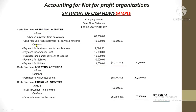In the operating activities section, you can see inflows and outflows of cash related to the normal course of operations of an organization. For inflows, we have payments received from customers whether paid in advance or not. For outflows, we have payment for permits, rent, salaries, supplies, and utilities — anything cash-related to operations belongs in this section.